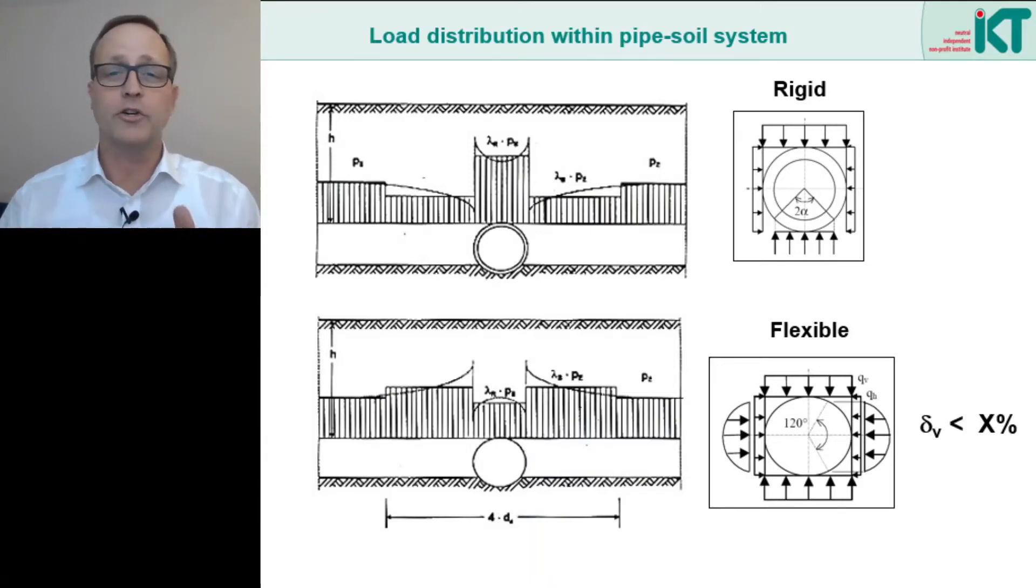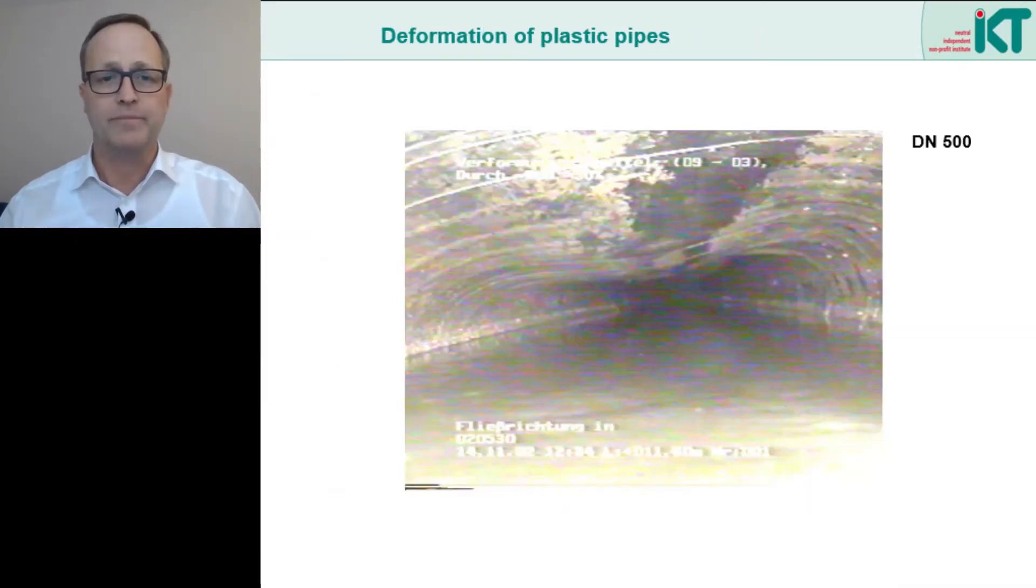So far so good, but then what do we do with such an image? Are such deformations still acceptable? At this point we can already say no, that is not acceptable. This is neither an ellipse, nor are the deformations below 6% of the diameter. Something must have gone thoroughly wrong here. Maybe high point loads on the pipe, combined with installation errors. All this is very likely here.